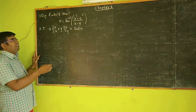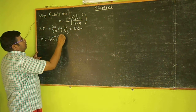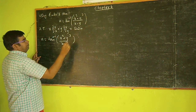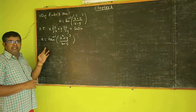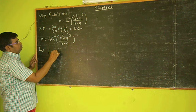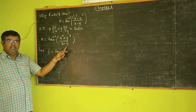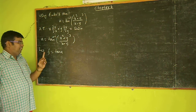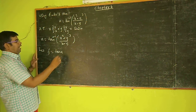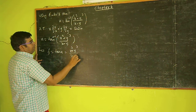First of all, the given function is u equal to tan inverse of x cube plus y cube by x minus y. So, tan u is a homogeneous function. Therefore, let we consider f is equal to tan u. So f is equal to tan u which is equal to x cube plus y cube by x minus y.